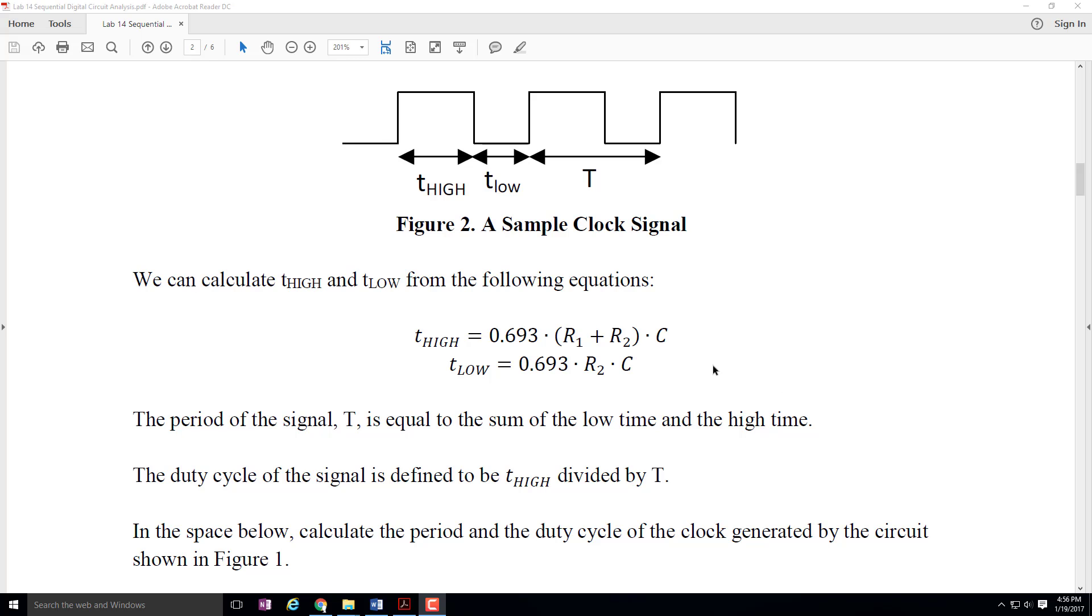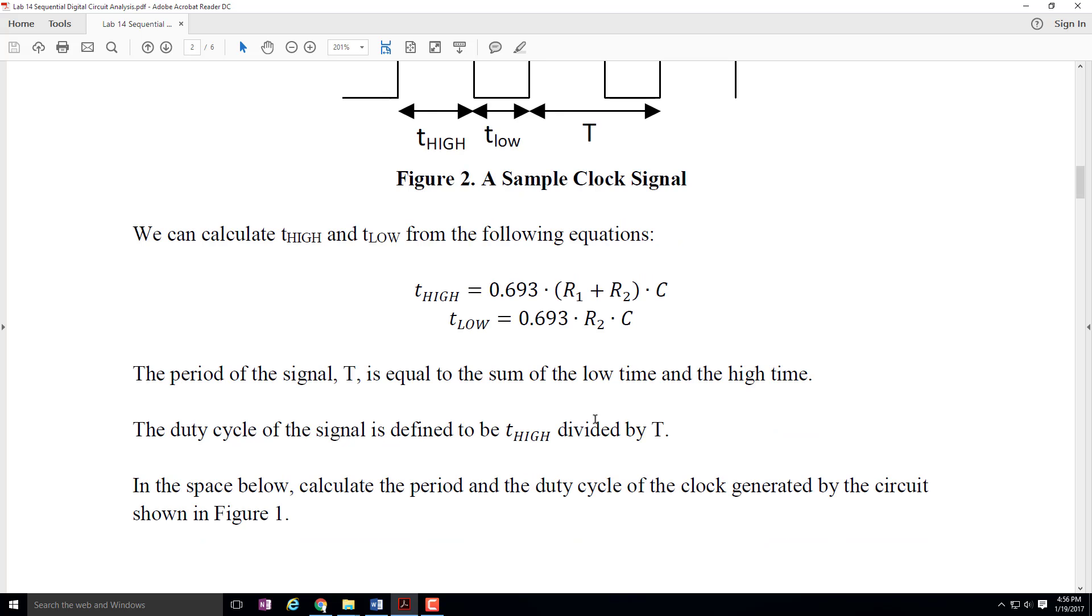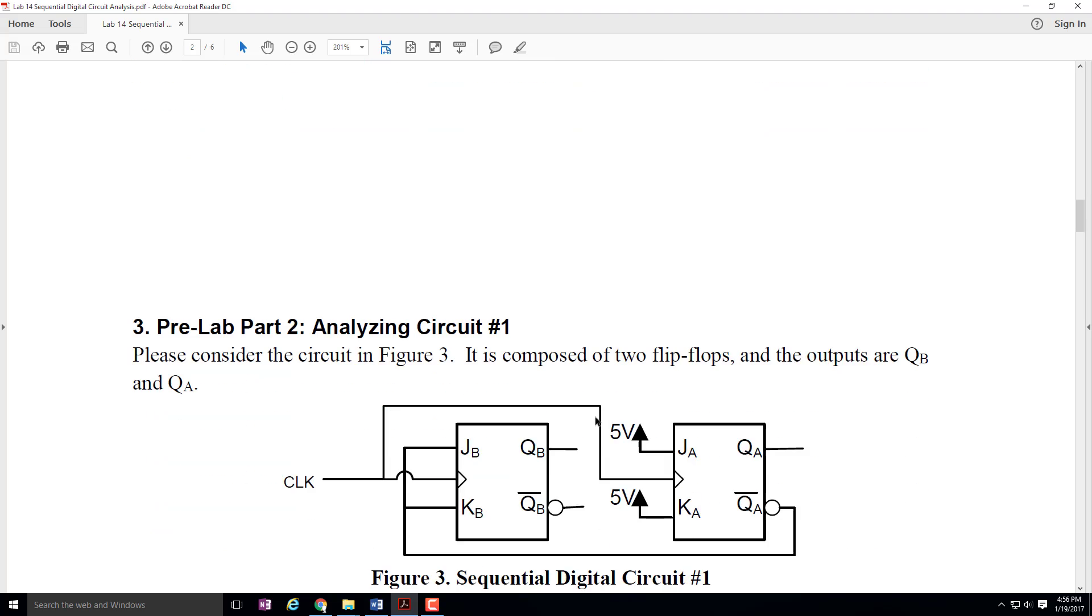You can then add those two numbers together to calculate the period, capital T, and then you can calculate what's called the duty cycle. The duty cycle of the signal is the high time divided by the total period. I'd like you to go ahead and calculate the high time, the low time, the period, and the duty cycle in the space that's shown here.